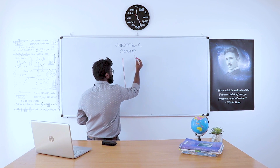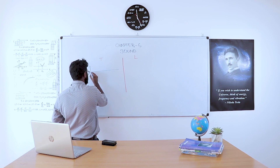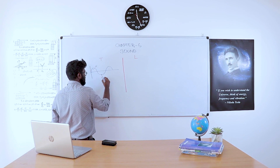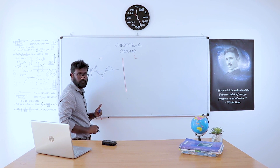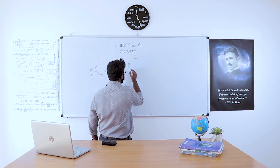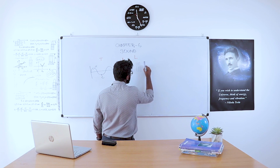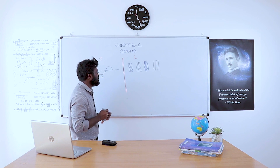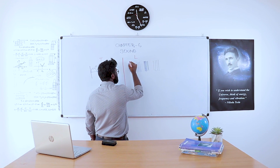For a transverse wave traveling in the form of crest and trough: the positive peak is called a crest and the negative peak is called a trough. This represents an ordinary wave shape. For a longitudinal wave, the peculiarity is different.